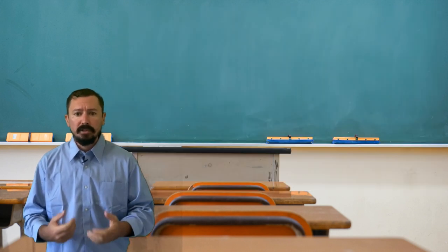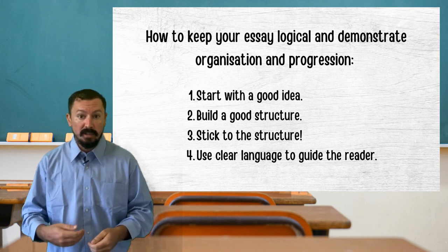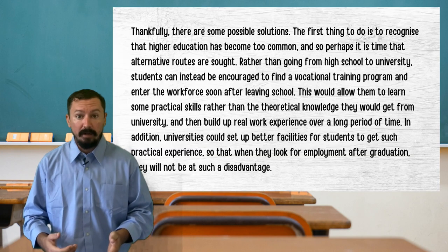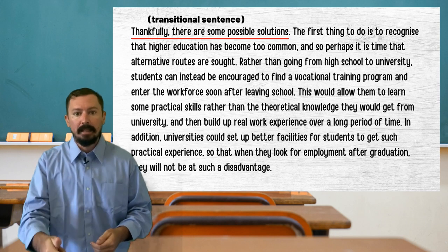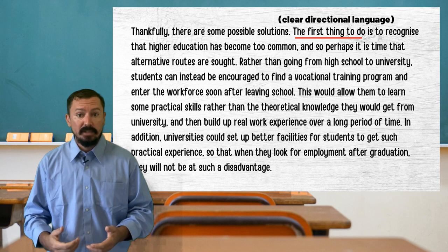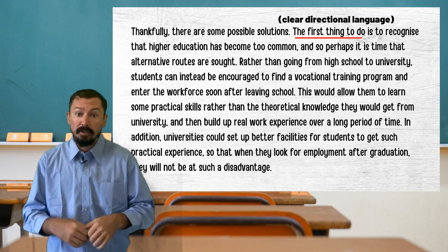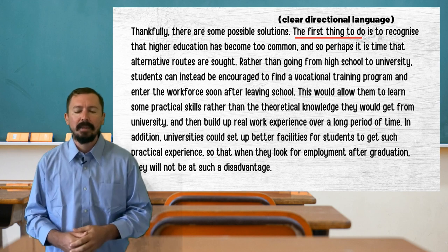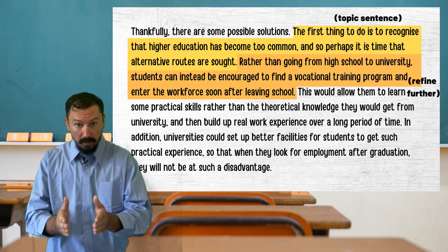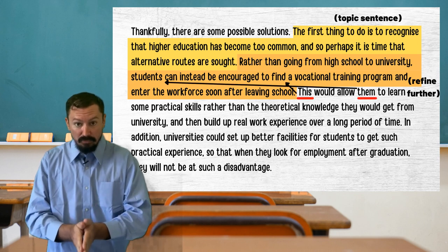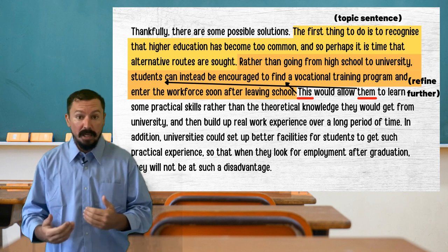Doing this isn't easy. Firstly, you need to think logically and plan your essay, and then you need to use clear language to guide the reader. In my third paragraph, I started with a transitional statement that joined the ideas from the end of paragraph two to the main idea of paragraph three. The main idea started with 'the first thing to do,' which is incredibly clear and easy to understand. My topic sentence presents a broad idea, followed by another idea that defines it more clearly, then a sentence that uses referencing effectively to convey a hypothetical scenario to make my suggestion clear to the reader.